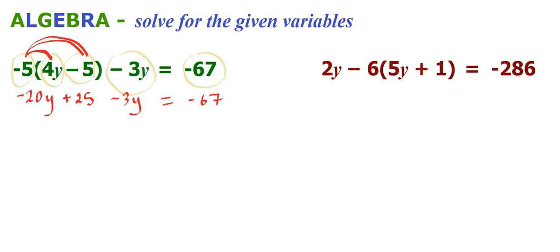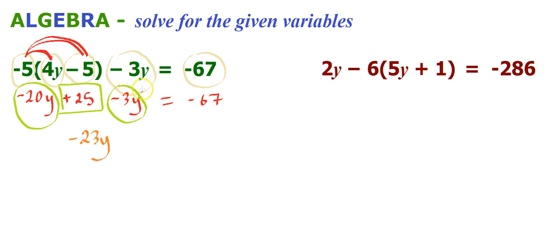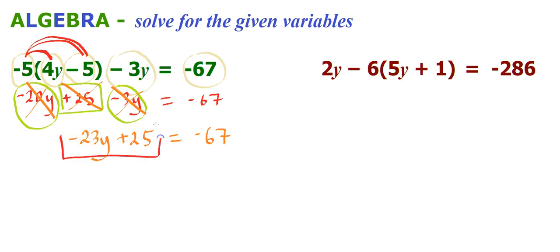Now we have the first line of our working: there's minus 20y, minus 3y, and positive 25. What we want to do is simplify this by collecting like terms. We've got minus 3y and minus 20y — collecting the y's gives us minus 23y. And we've also got positive 25. The right-hand side of the equation hasn't been touched yet, so we just bring that down.